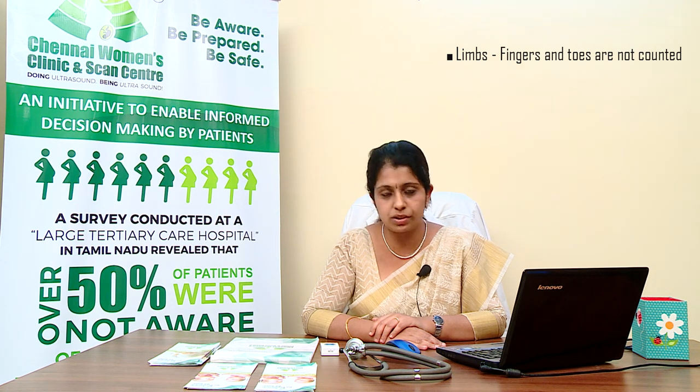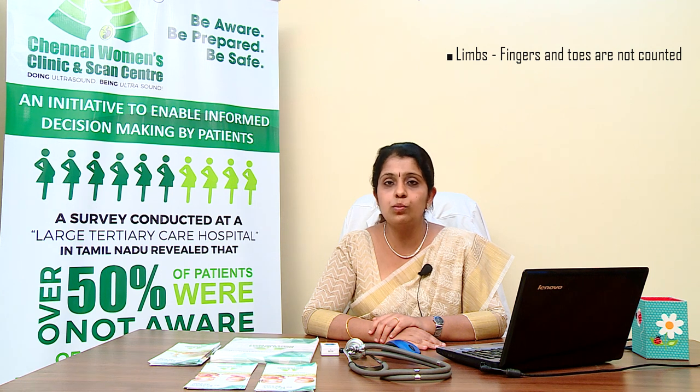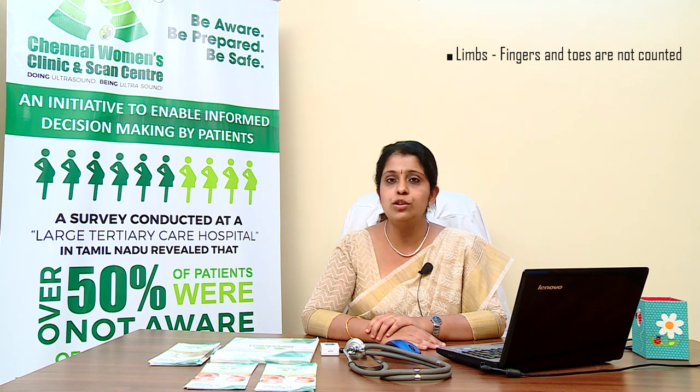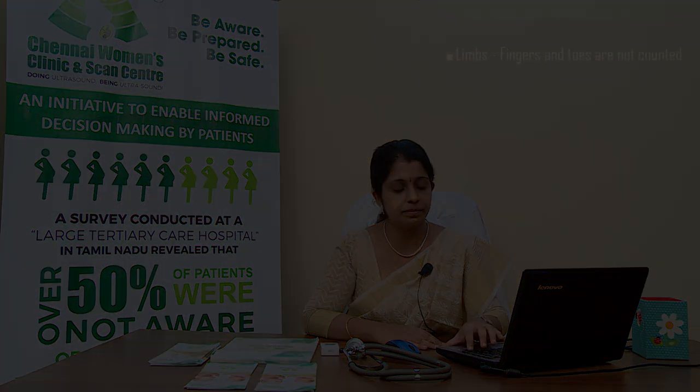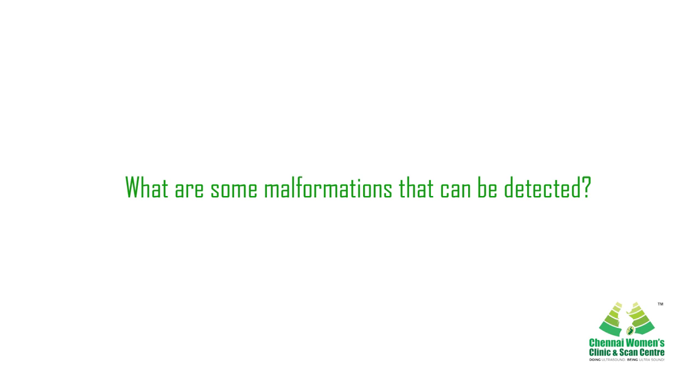The placenta will be described as low if it reaches down to or covers the mouth of the uterus. If the placenta is lying low, the patient will have to come back for another scan in the third trimester to check its position. It is also possible to count the number of blood vessels — two arteries and one vein — which connect the umbilical cord from the baby to the placenta.